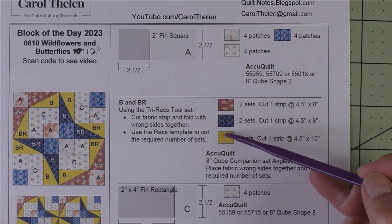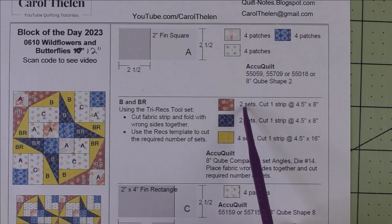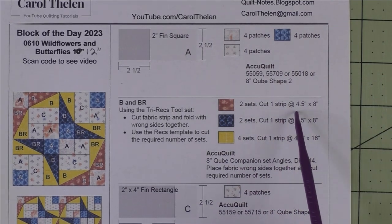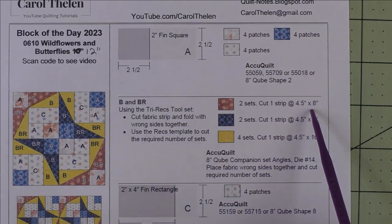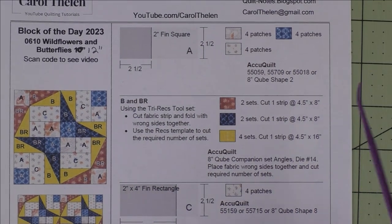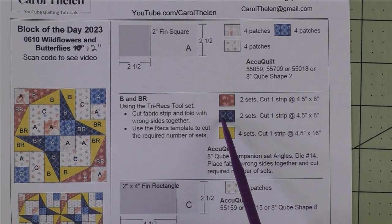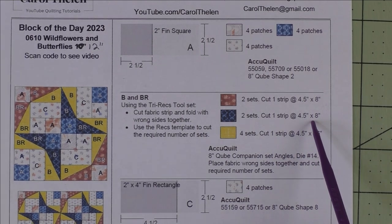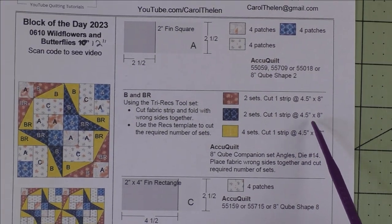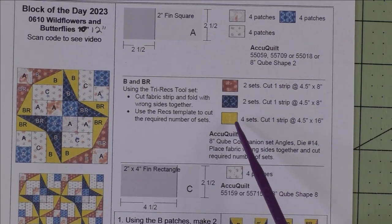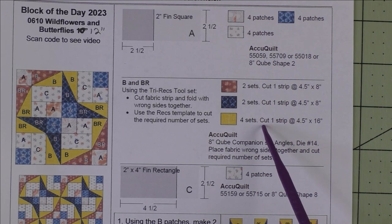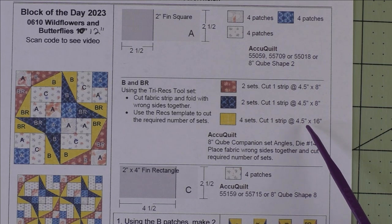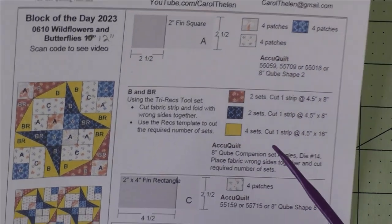For the half rectangle triangles: for the rust fabric, cut two sets — one strip at 4.5 by 8 inches, fold in half with wrong sides together, then cut. For the blue, also two sets — one strip at 4.5 by 8 inches, folded the same way. For the yellow fabric, cut four sets — one strip at 4.5 by 16 inches, folded in half with wrong sides together.